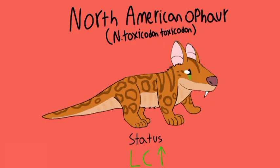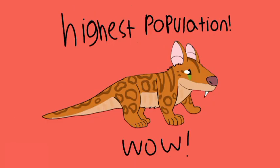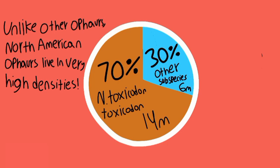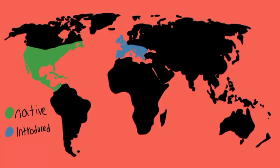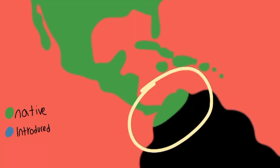First, the North American O4. These O4s are the most abundant, forming approximately 70% of the estimated population of 20 million O4s. Their range extends as far north as southern Canada and as far south as South America.